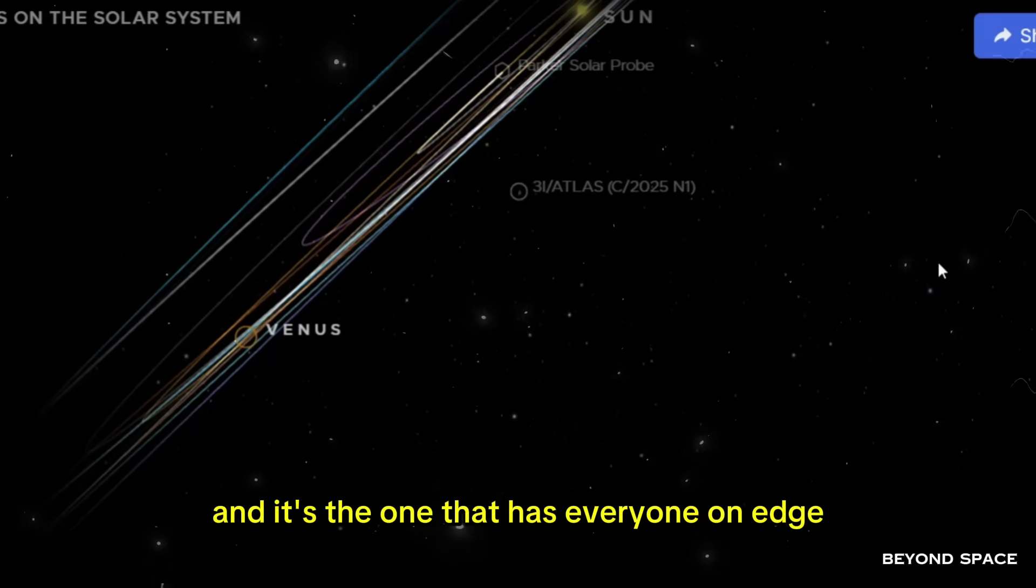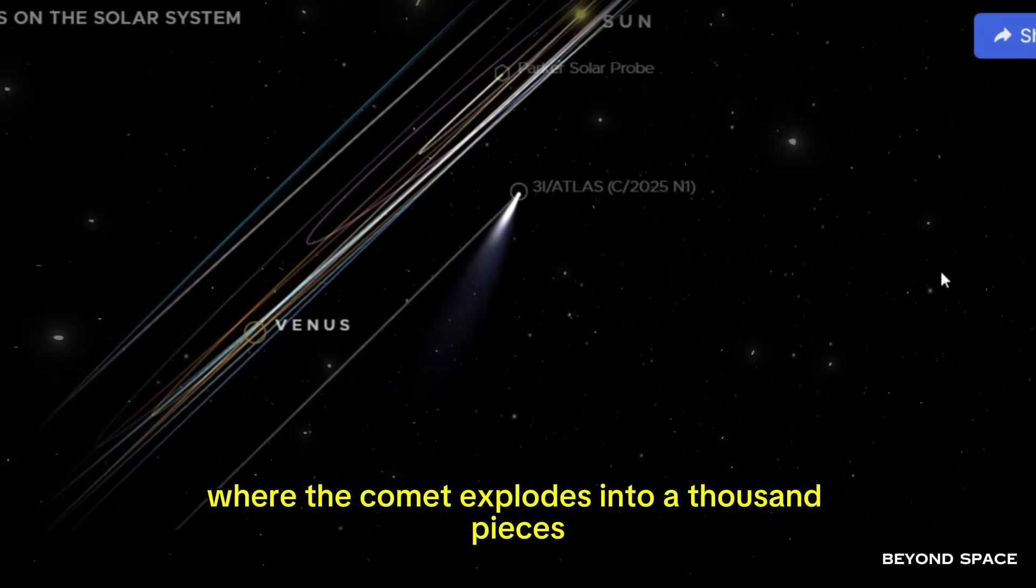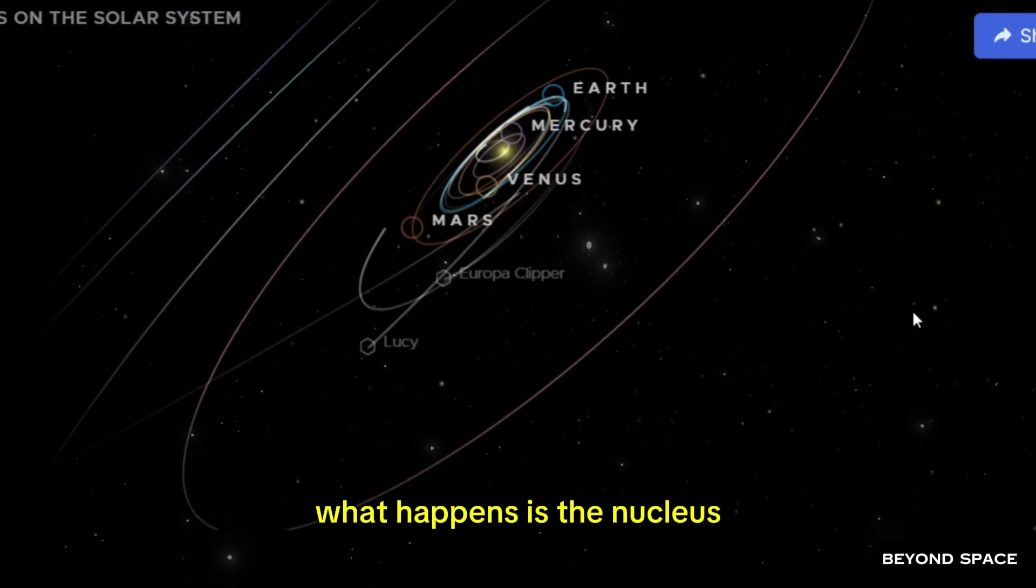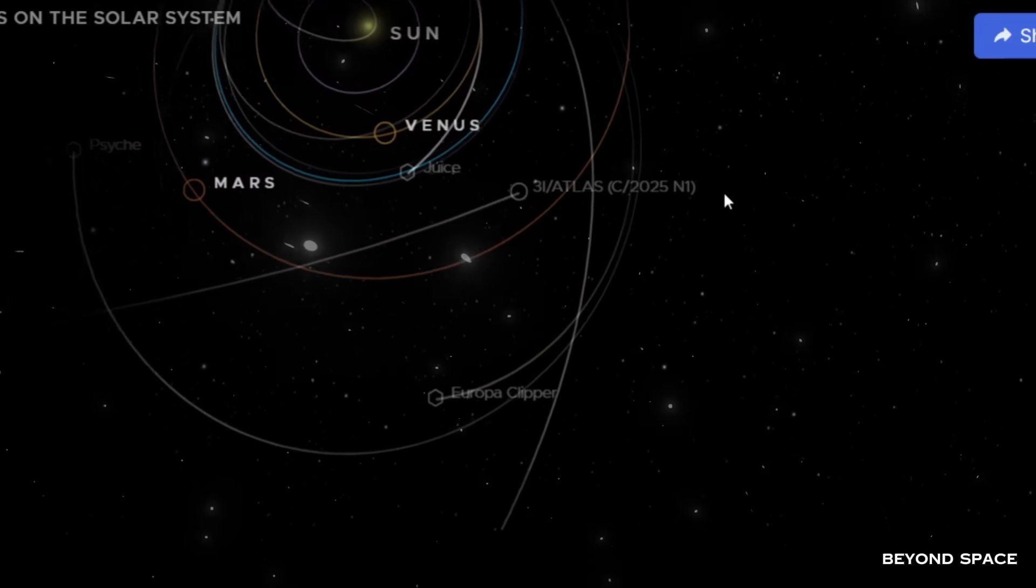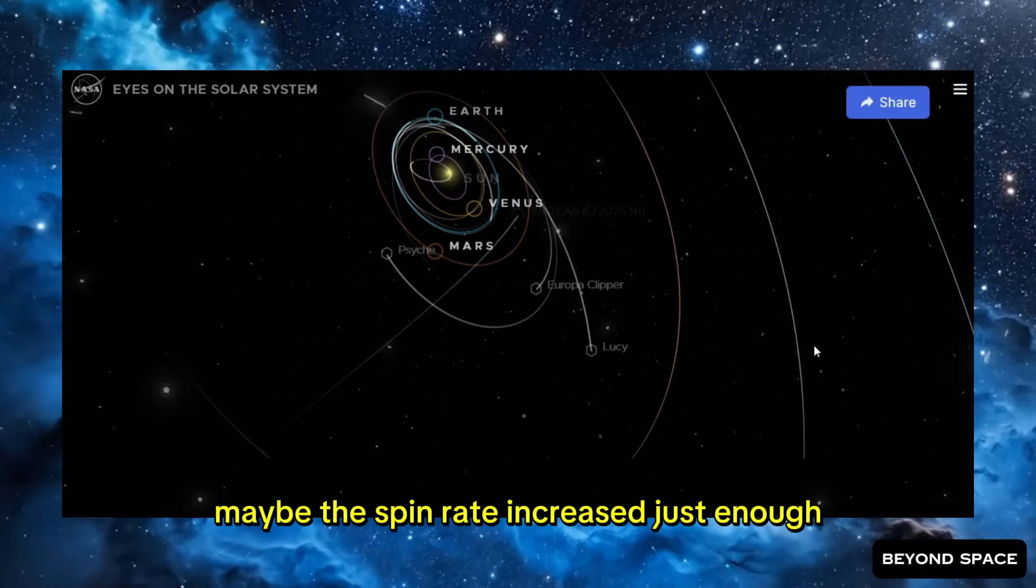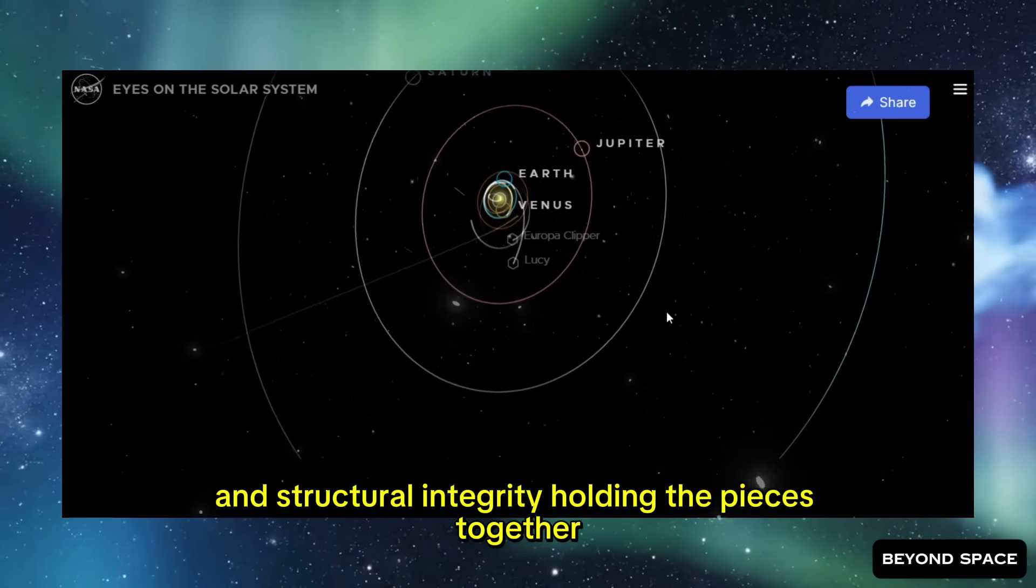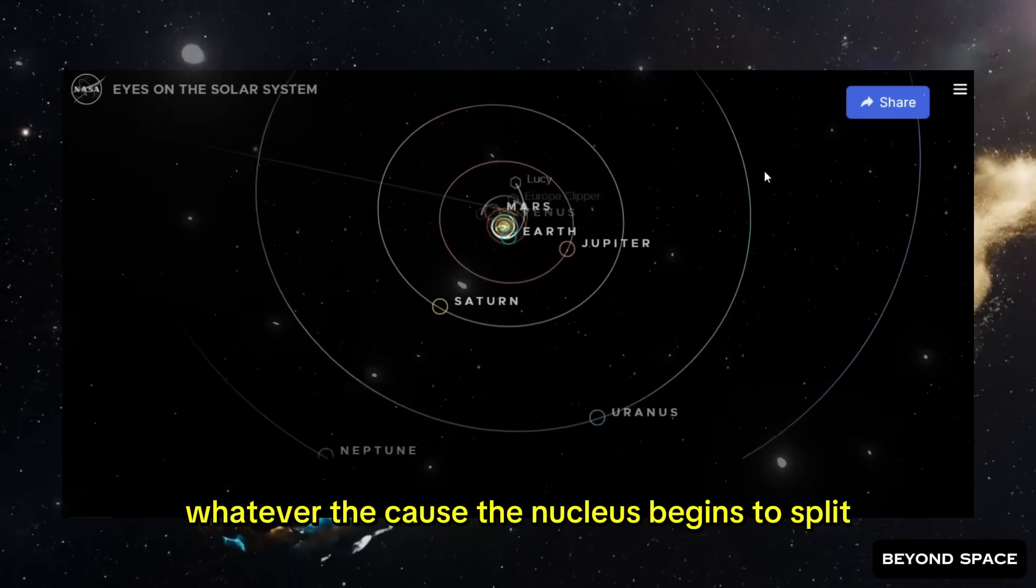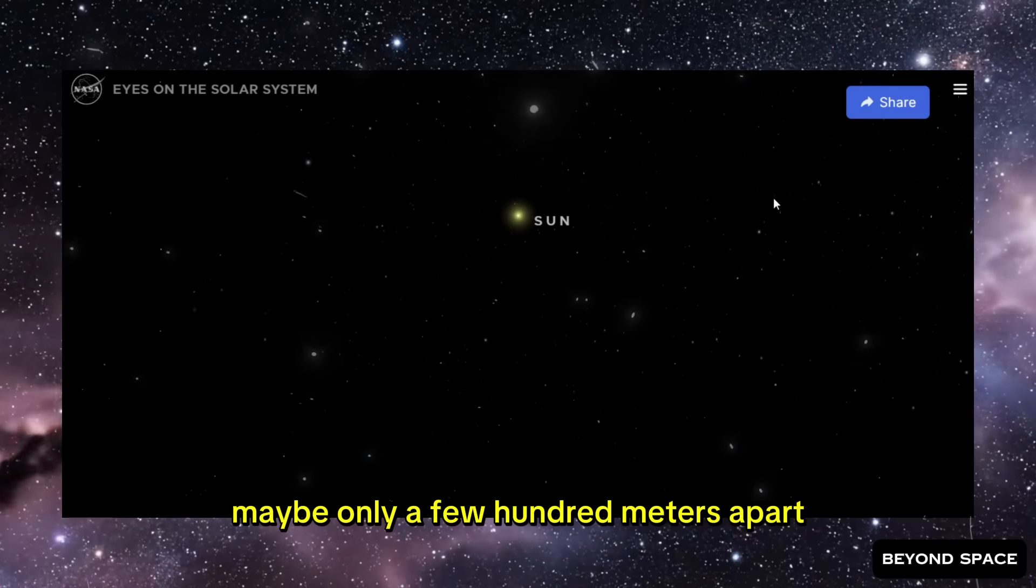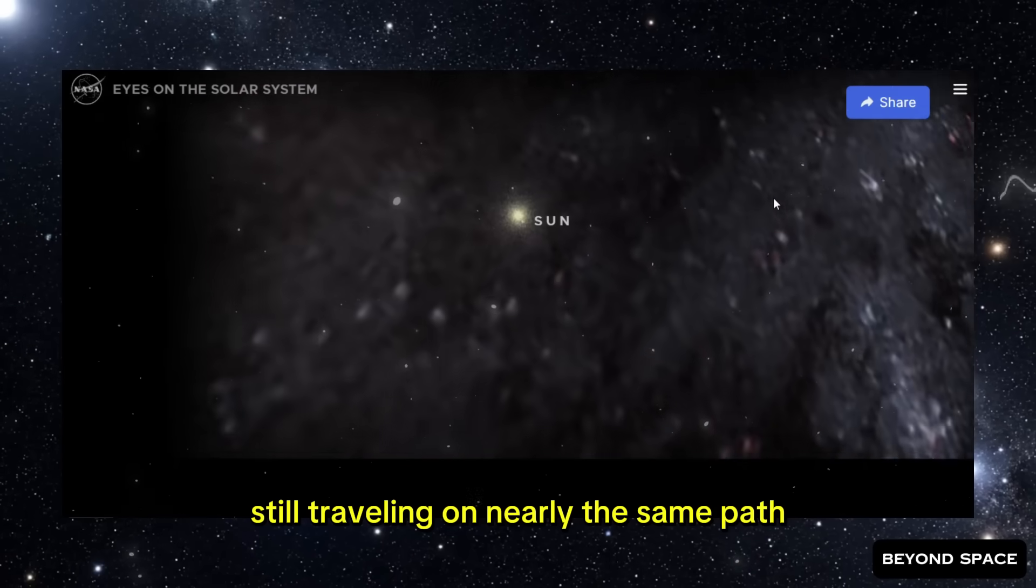But there's another possibility, and it's the one that has everyone on edge. Fragmentation. Not the Hollywood version where the comet explodes into a thousand pieces in a spectacular fireball. Real fragmentation is slower, quieter, more insidious. What happens is the nucleus, already weakened by internal stress and outgassing, starts to pull apart. Maybe there's a crack that's been there for a long time, and the thermal stress finally widens it. Maybe the spin rate increased just enough that centrifugal force started to overcome the weak gravity and structural integrity holding the pieces together. Whatever the cause, the nucleus begins to split. At first, it's not obvious. The two pieces are still close together, maybe only a few hundred meters apart, maybe less. They're still surrounded by the same coma, still venting gas and dust, still traveling on nearly the same path.